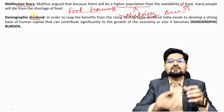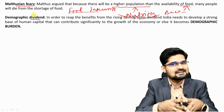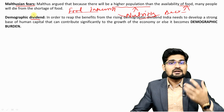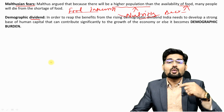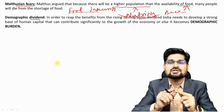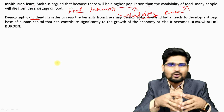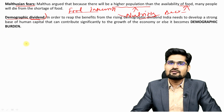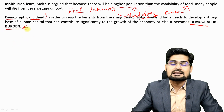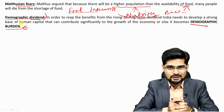Demographic dividend is also a key concept. India is called a youth country, and the 21st century is seen as India's century due to its huge youth population. However, to reap the benefits of this demographic dividend, we must ensure that the youth are well-nourished, food-secure, employed, and lifted out of poverty. Failing to do so turns the demographic dividend into a demographic burden — the difference depends entirely on the quality of treatment and grooming provided to the population.